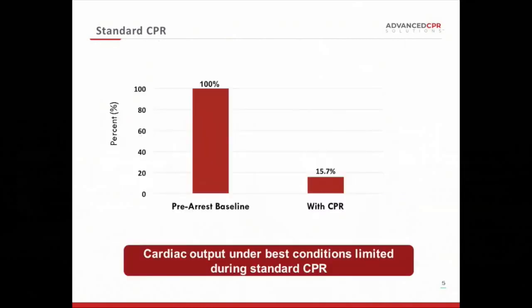This graph shows what happens when you have ideal CPR in an animal model. On the left, normal physiology with 100% of good cardiac output. On the right, in an animal model with perfect CPR, you only get about 15.7% of normal blood flow coming out of the heart. While that's good enough for some patients, it's typically not good enough long term, and we think we can improve things.